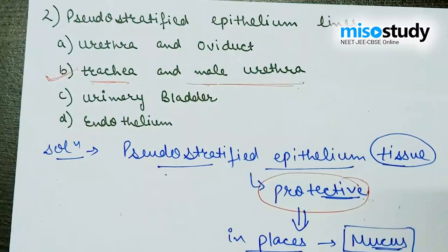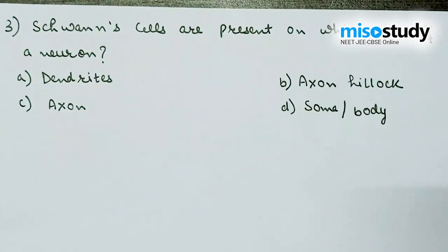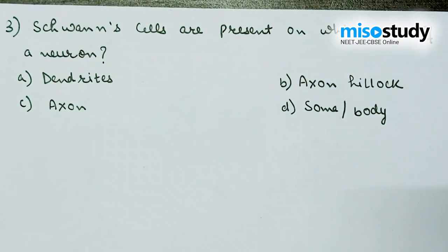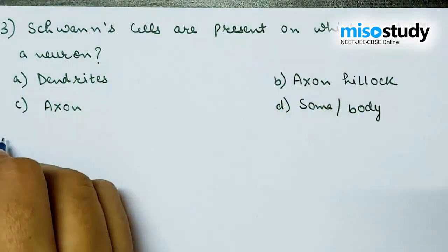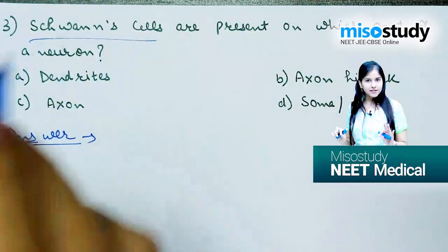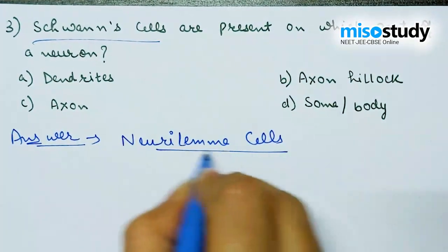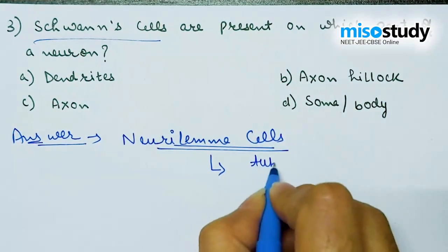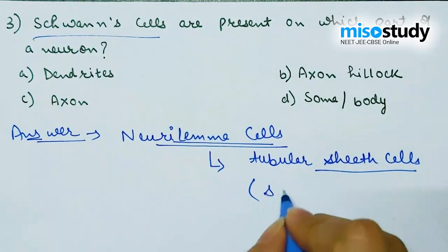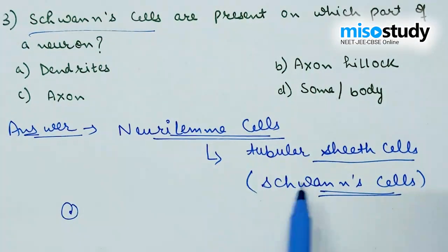Let's move to the next question: Schwann cells are present on which part of a neuron? Options: A) dendrites, B) axon hillock, C) axon, D) soma or body. When we discuss Schwann cells, first we need to know what they are. The neurolemma cells consist of tubular sheath cells, and these tubular sheath cells are also known as Schwann cells.